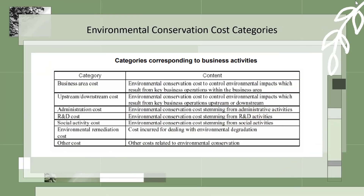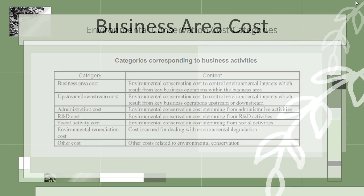The key environmental conservation cost categories are: business area cost, upstream or downstream cost, administration cost, research and development cost, social activity cost, environmental remediation cost, and other costs.